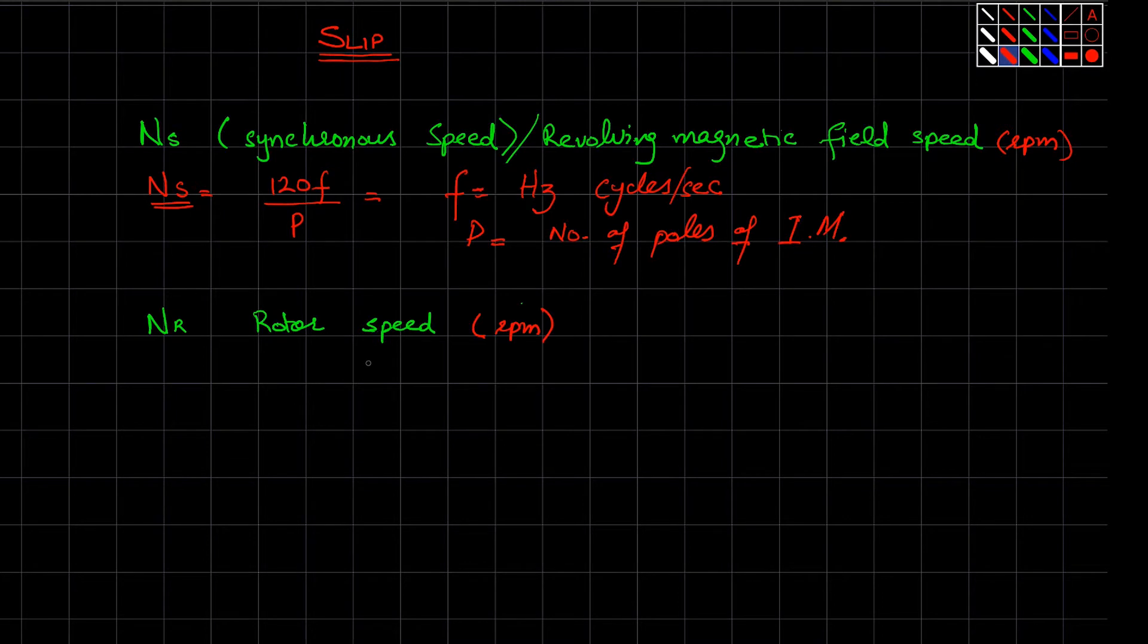Now Nr is always less than equals to Ns, because Ns is your revolving magnetic field, even if you have load or no load. It remains constant and it depends on two quantities only: one is frequency and other one is the poles. So Nr basically depends upon load. As we increase the load, this Nr reduces. If you increase the load, your rotor speed will reduce.